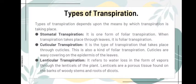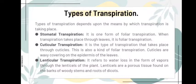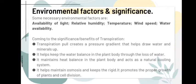There are three types of transpiration. First is Stomatal Transpiration — this transpiration occurs through the stomata in the leaves. Second is Cuticular Transpiration — there is a waxy covering on the leaves called the cuticle, and transpiration through this covering is called cuticular transpiration. Third is Lenticular Transpiration — lenticels are present on the bark of stems and roots in dicots, and water loss through them is called lenticular transpiration.